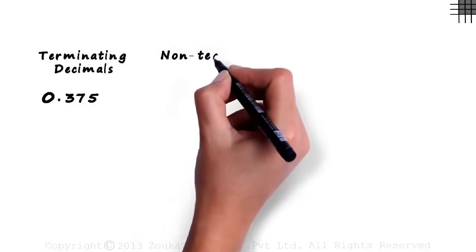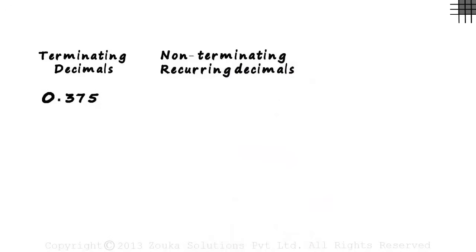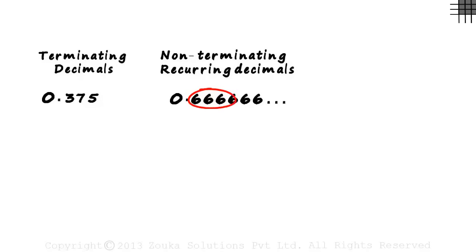Then we have non-terminating recurring decimals. Numbers like zero point six six six six and so on. The sixes don't end. It's called recurring since the same number reoccurs, and non-terminating since it reoccurs infinitely.